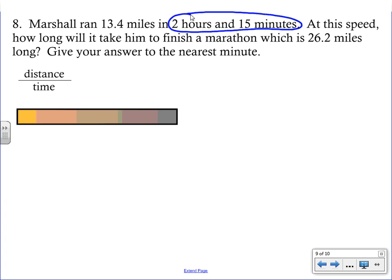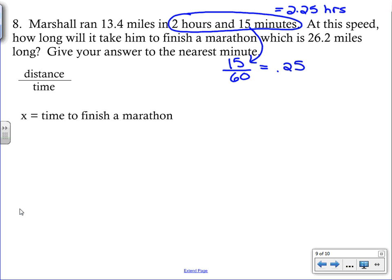So what you have to do is you have to convert that. So what we're going to take is the 15 minutes. And we're going to divide that by 60. You get 0.25, which should make sense. If you look at a clock, 15 minutes is a quarter of an hour. So what we're really looking at here is 2.25 hours. You have to make sure that you have everything in just one single unit. You can't put hours and minutes into your problem. So now when we're looking at the distance and the time, we'll compare those two things. We have our time just given in hours. And our unknown this time is how long it's going to take Marshall to finish the marathon. So again, we're looking at x for time.